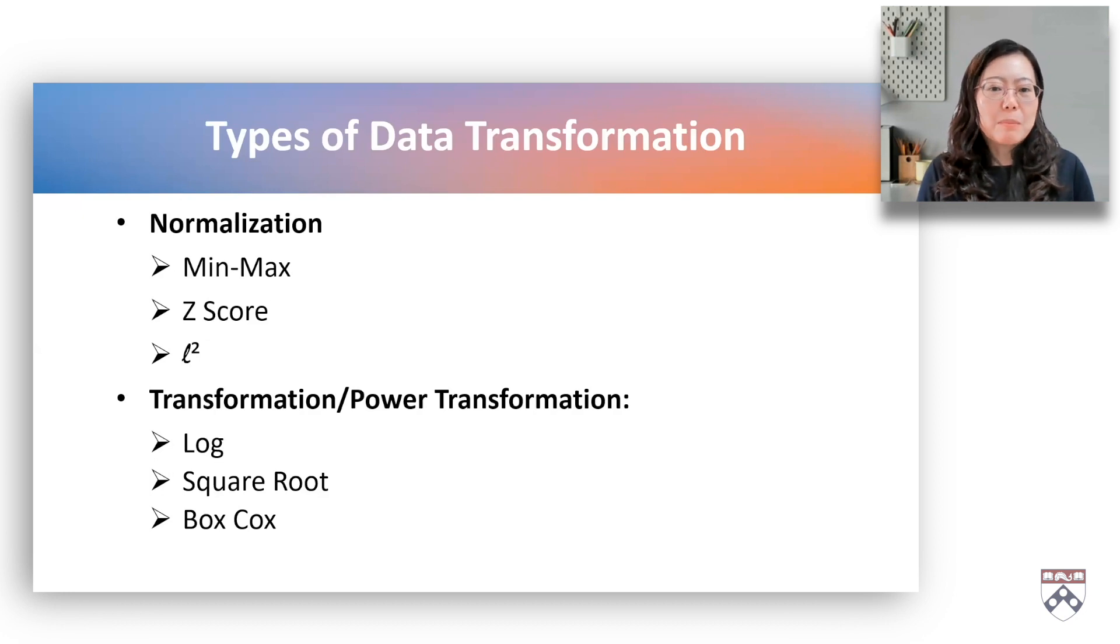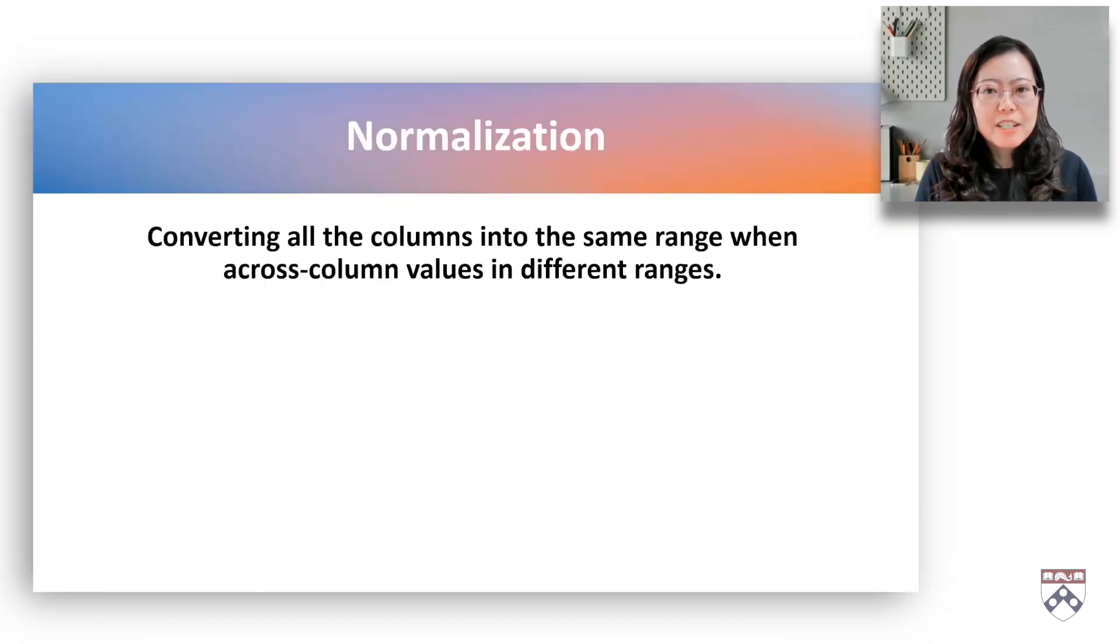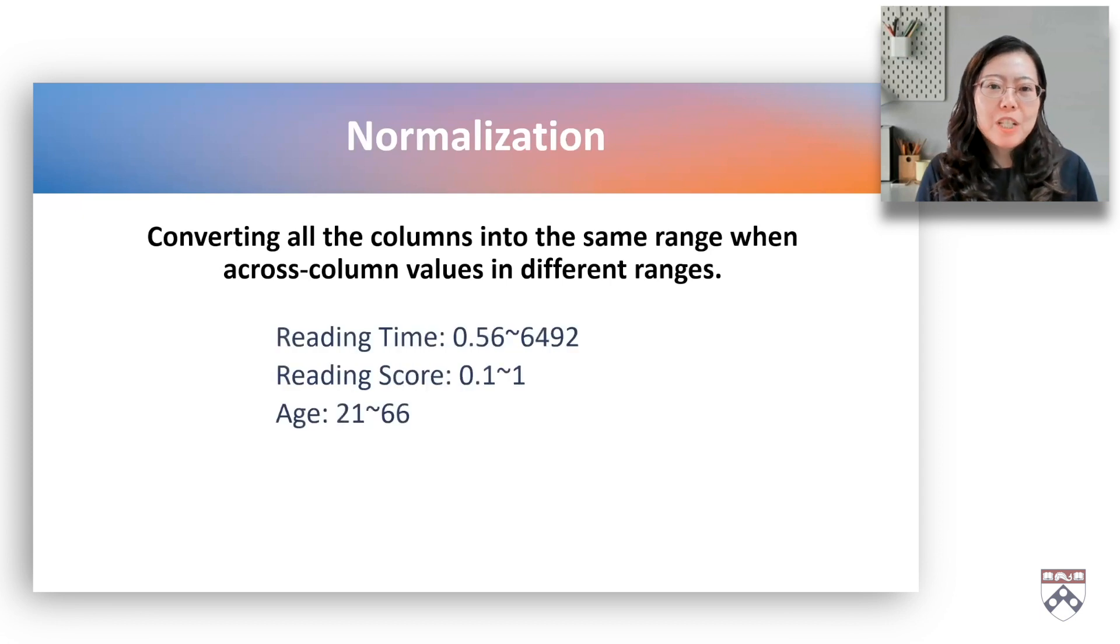We will discuss normalization in this video and transformation in the next video. Different features in the dataset may have values in different ranges. For example, in a dataset, reading time ranges from a few seconds to 1,000, but the range of reading score is a proportion of correct items from 0 to 1. That means one column is more weighted compared to others. Therefore, we need to normalize the values in all the columns.